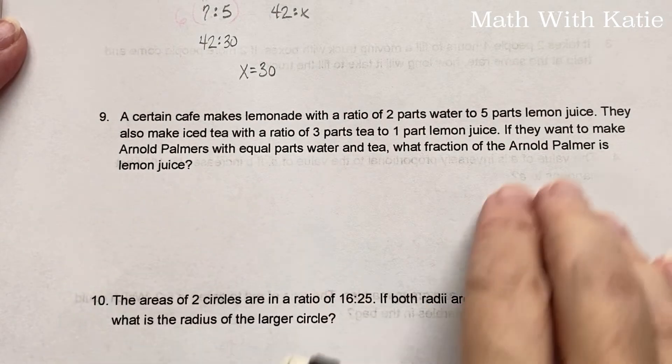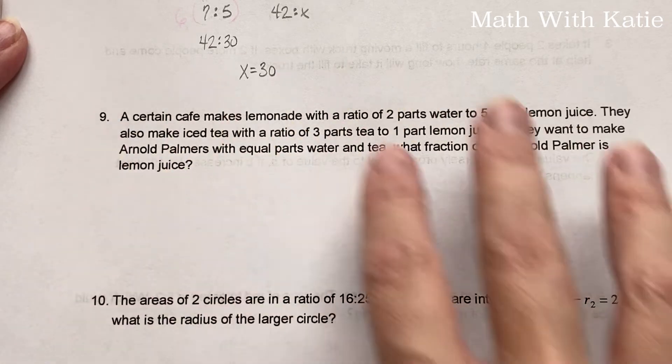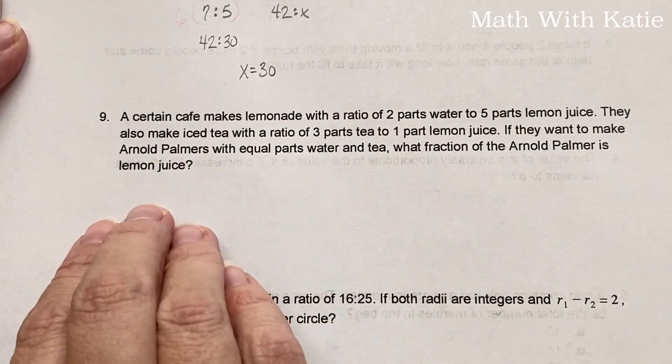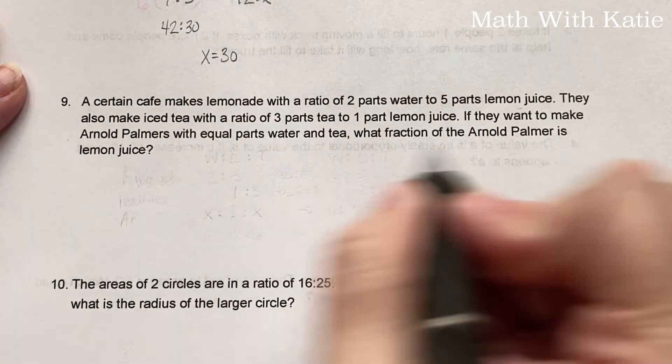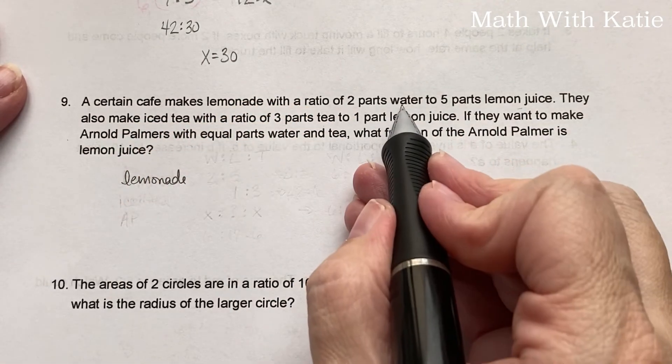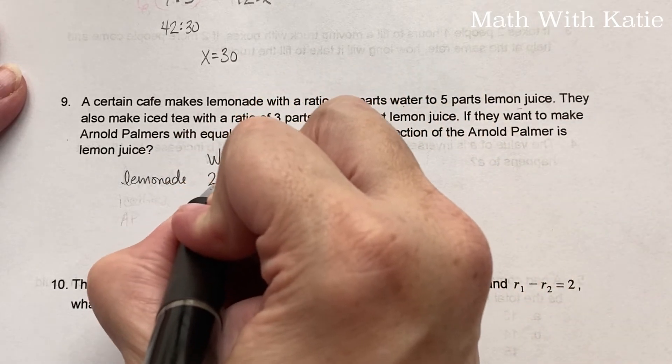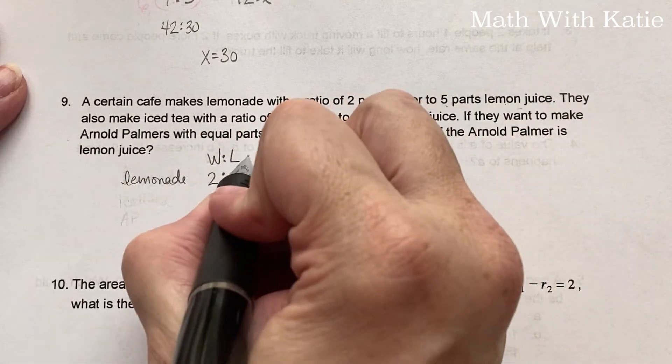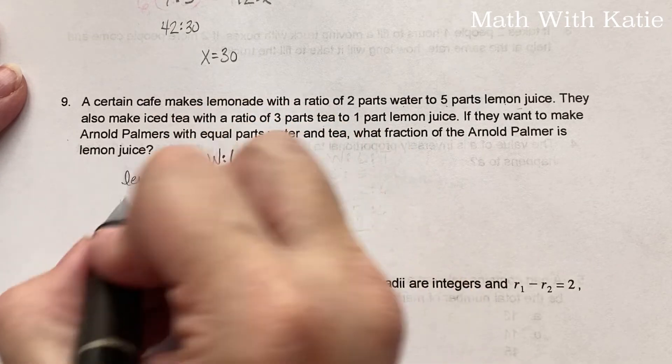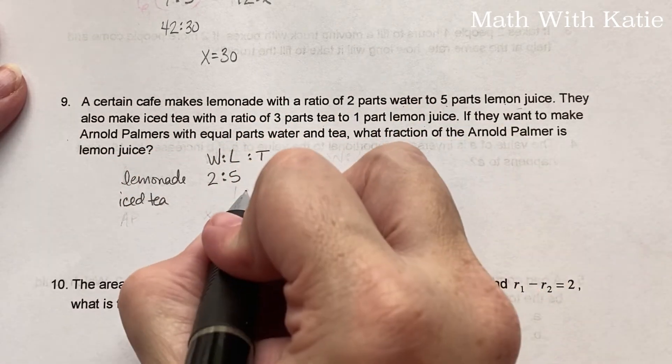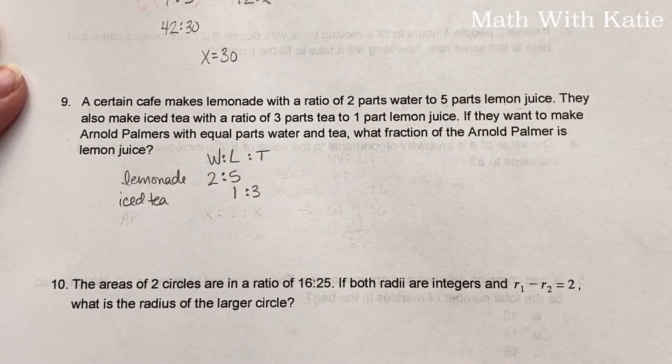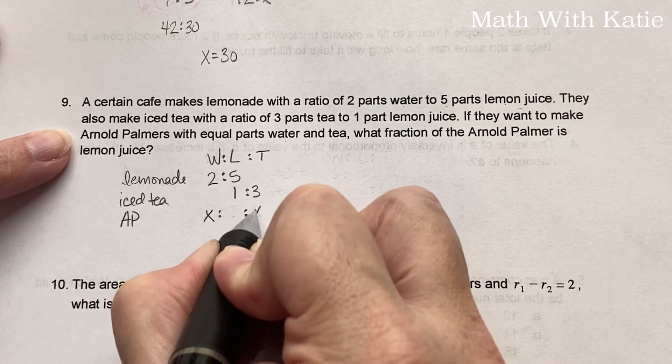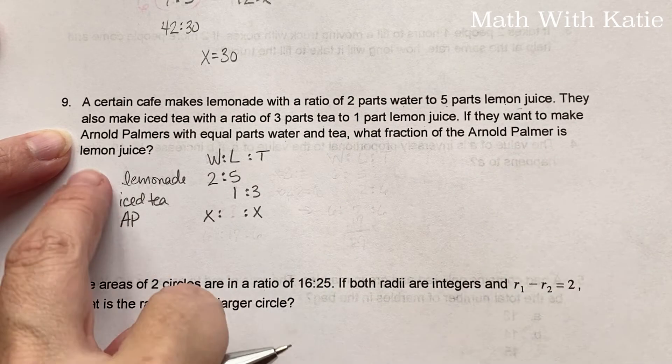This next one is your standard formula for any time they have a question about solutions. It doesn't matter if it's lemonade or some chemical thing. The steps we're getting ready to do can apply to all these types of questions. A certain cafe makes lemonade with a ratio of two parts water to five parts lemon juice. They also make iced tea with a ratio of three parts tea to one part lemon. If they want to make Arnold Palmers with equal parts water and tea, what fraction of the Arnold Palmer is lemon juice?